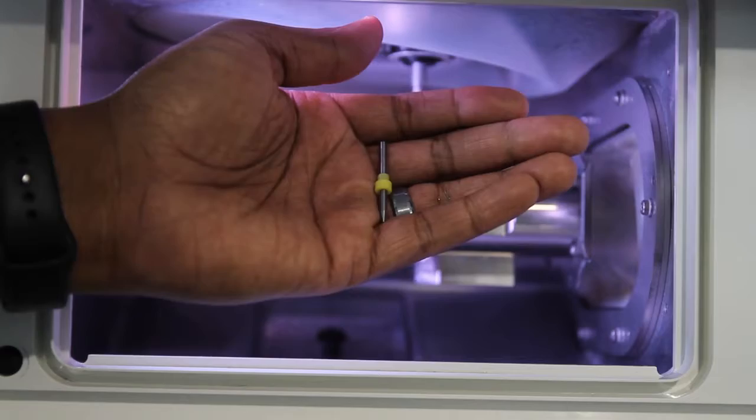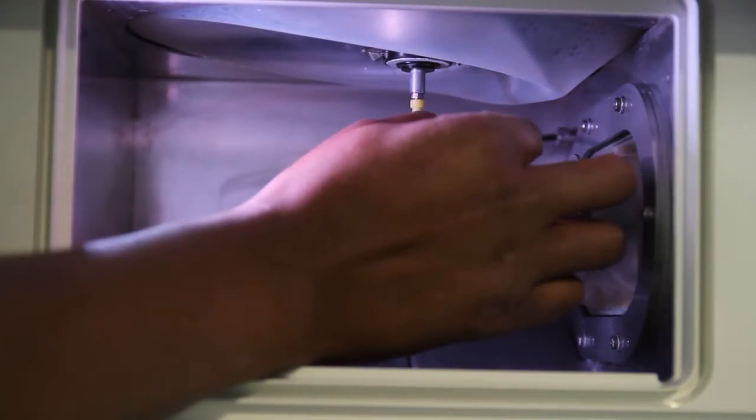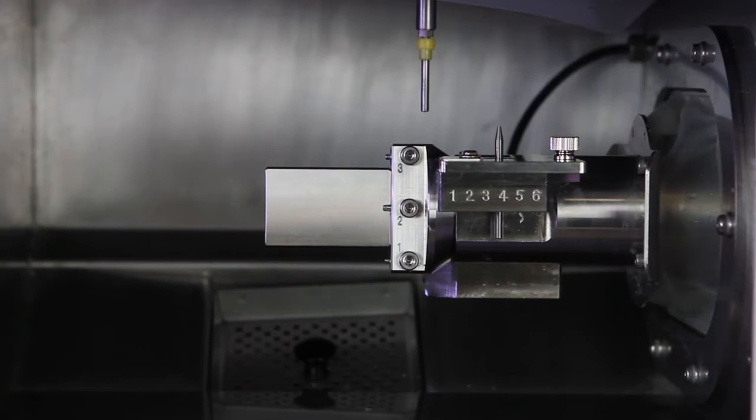Next, insert the detection pin into the open slot on the ATC magazine correction jig. Close the front cover.